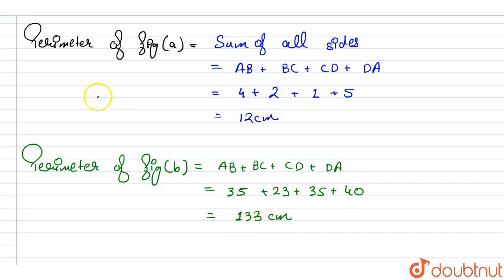So this is the perimeter of the figure number B. So we have found out the perimeter of figure A, that is 12 centimeter, and we have also found out the perimeter of figure B, that is 133 centimeter. So this is the answer of the given question.